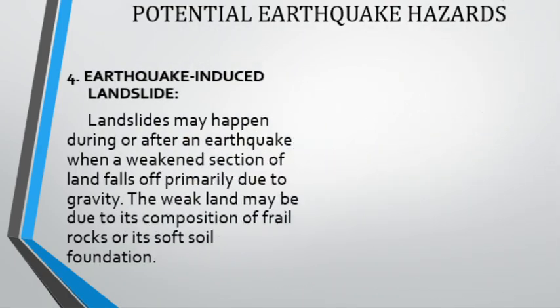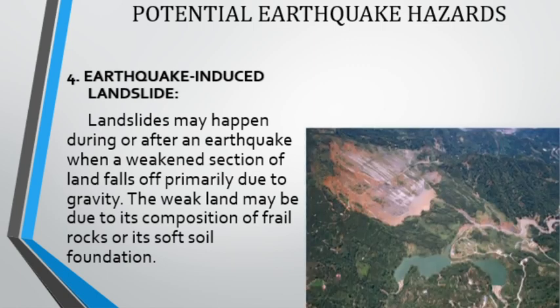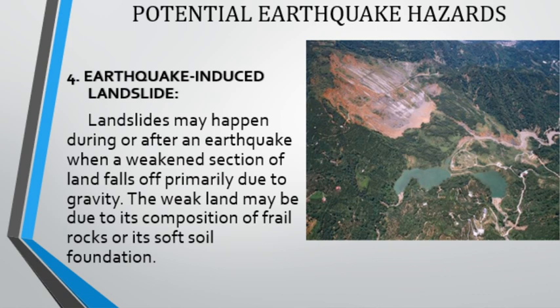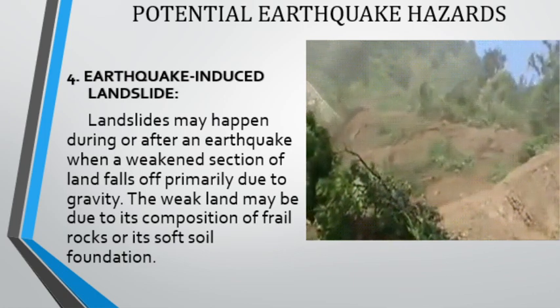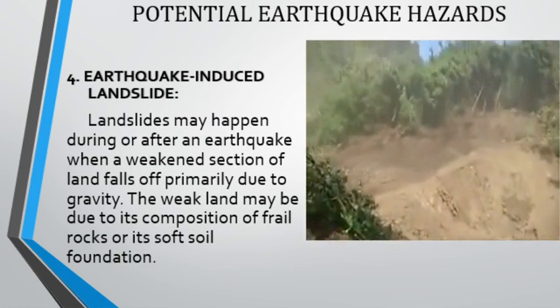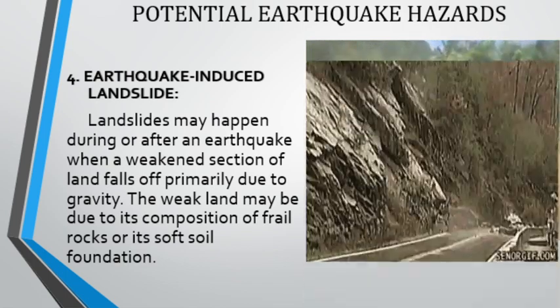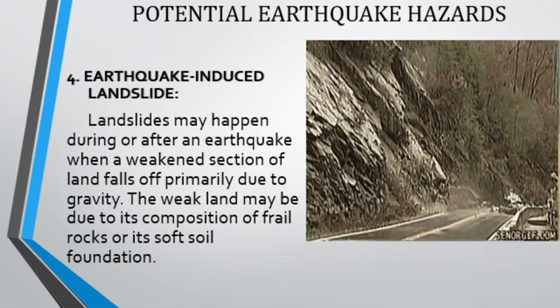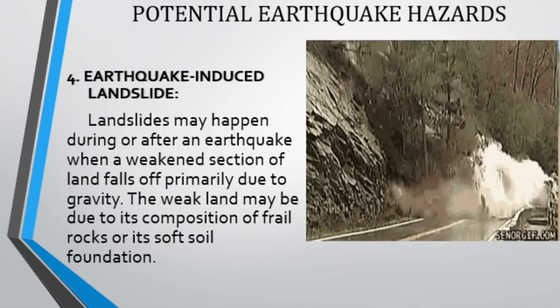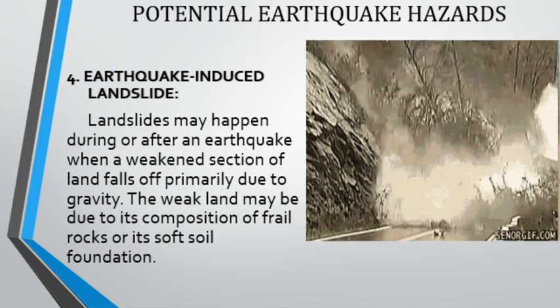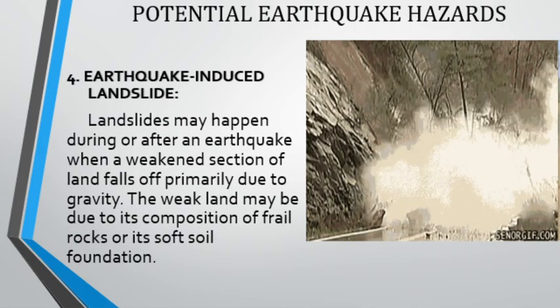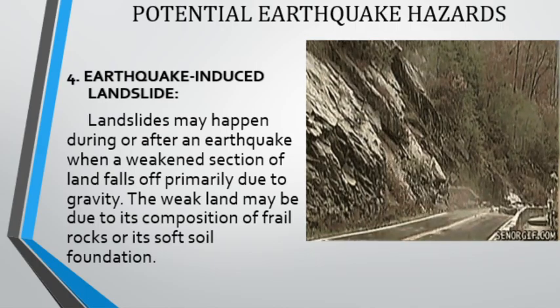The fourth hazard is earthquake-induced landslide. Landslides may happen during or after an earthquake when a weakened section of land falls off primarily due to gravity. This weak land may be due to its composition of frail rocks or soft soil foundation. Thus, houses near a weak land form could be at higher risk of earthquake-induced landslides.